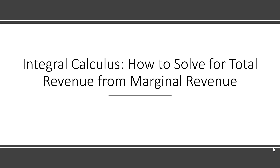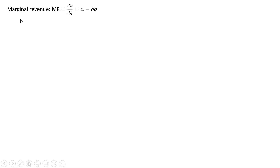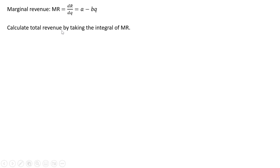Hello, in this video we're going to learn how to solve for total revenue from marginal revenue using integral calculus. Marginal revenue, MR, is a derivative of total revenue with respect to output, and we're going to just look at it in general form here: equals a minus b times q, where q is the quantity of output.